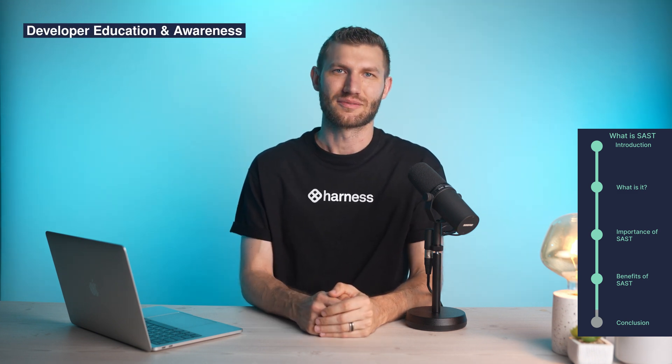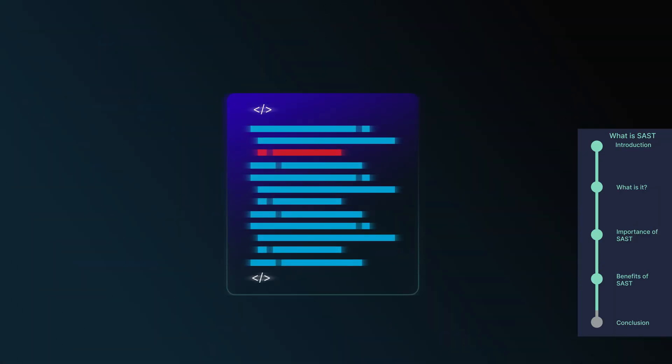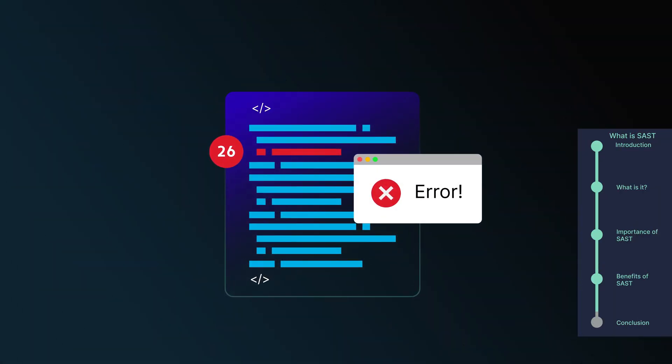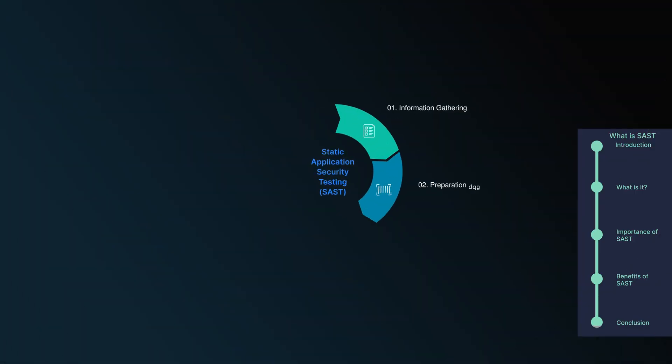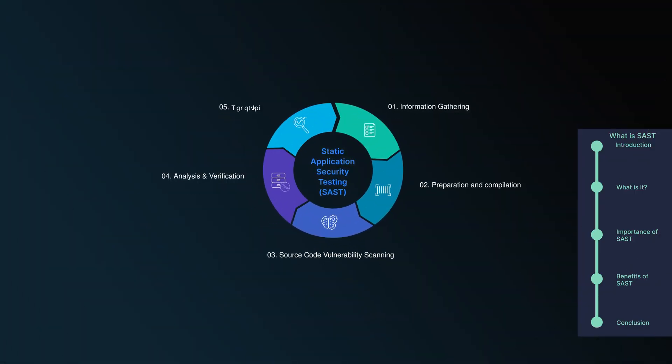Developer Education and Awareness: SAST tools provide detailed feedback on coding errors and insecure practices, enabling developers to learn and improve their coding skills. This continuous learning process promotes a security-conscious mindset among developers, leading to more secure and robust code from the outset. In conclusion, static application security testing is essential for identifying vulnerabilities early in the software development lifecycle, allowing developers to address security issues before deployment. By analyzing code without execution, SAST promotes secure coding practices, reduces the risk of costly security breaches, and helps meet compliance requirements.